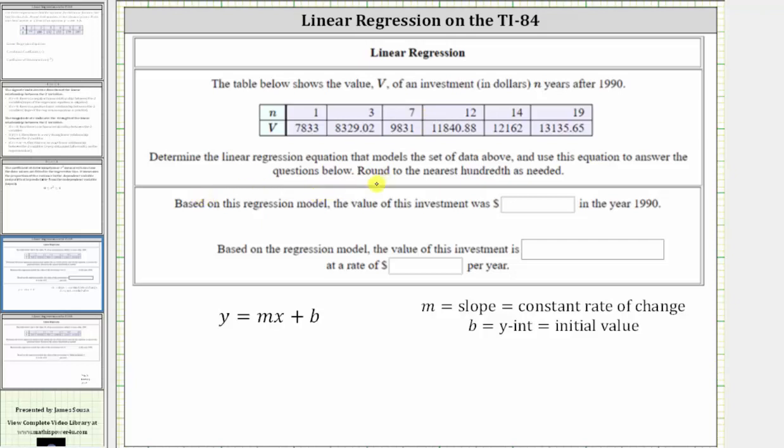Determine the linear regression equation that models the set of data above and use this equation to answer the questions below. Round to the nearest hundredth or two decimal places as needed. We begin by performing the regression on the TI-84. The first step is to enter the data into the calculator.